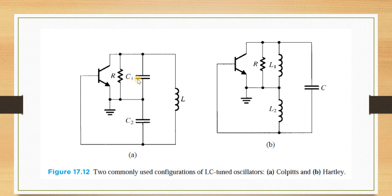The first figure shows the Colpitts oscillator — this configuration uses a BJT with collector, emitter, and base terminals. Across the collector and emitter we have one resistor R, and here is the tuned circuit: two capacitors and one inductor. Two capacitors and one inductor confirms it as a Colpitts oscillator. One end of the junction connects to the collector and the other connects to the base.